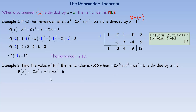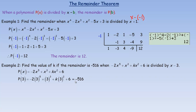Here's our polynomial. Since we're dividing by x minus 3 and we want to find the remainder, we put 3 in place of x and find p(3). If the remainder is negative 516, then p(3) equals negative 516, and that's how we find the value of k.